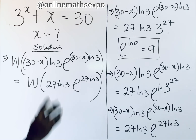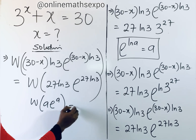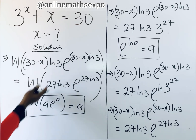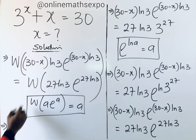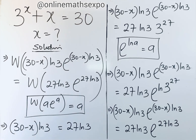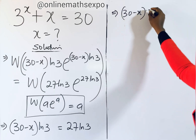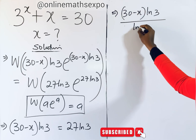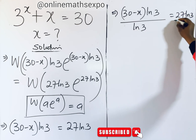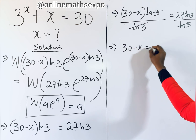Taking the Lambert W function of both sides, and using the rule that W of a times e to the power of a equals a, we simplify: the left side gives us 30 minus x times ln of 3, and the right side gives us 27 times ln of 3. To get our x, we divide both sides by ln of 3 — these cancel — leaving us with 30 minus x is equal to 27.